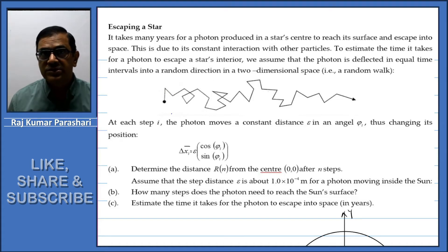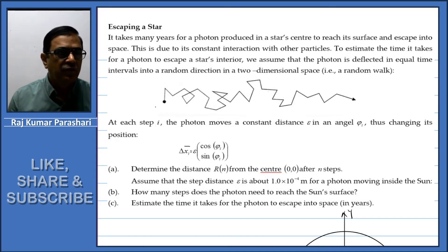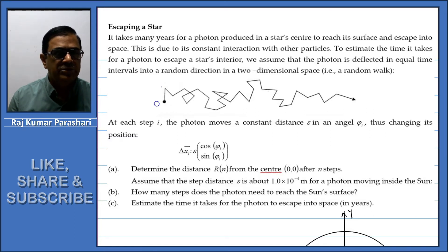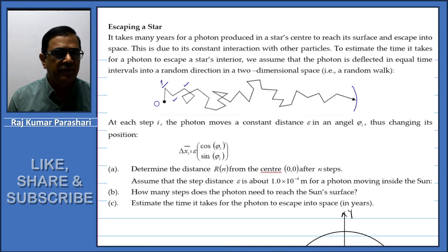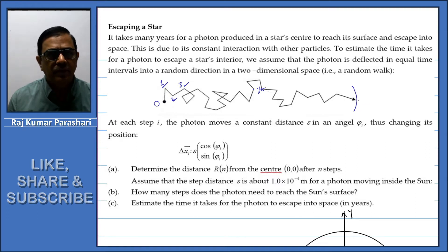In this problem, a photon is released at the center of the Sun. It suffers multiple interactions before appearing at the surface of the Sun. This is the first interaction, this is the second interaction, third interaction. Let's assume this to be the ith interaction. As it reaches the surface of the Sun, it suffers the nth interaction.